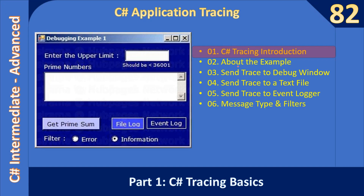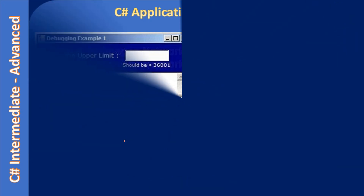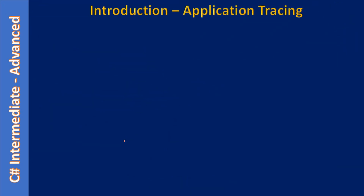In this series we will learn: tracing introduction, then how to use this example application, then sending trace to the debug window, sending trace to a text file, sending trace to the Windows event logger, and after that we will see an example for message type filters — error as well as information messages.